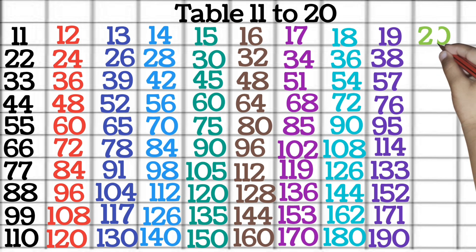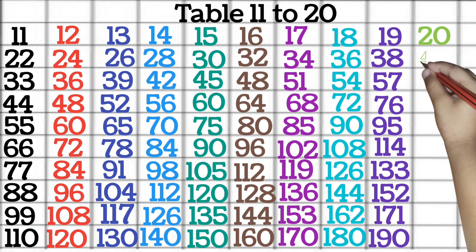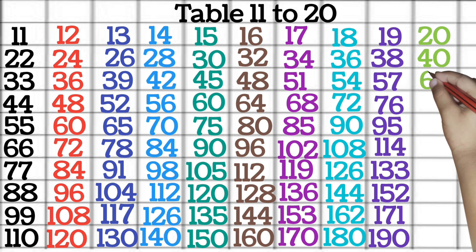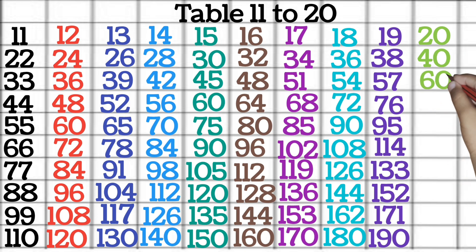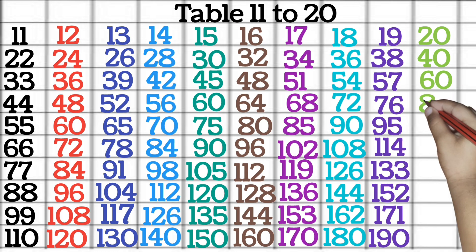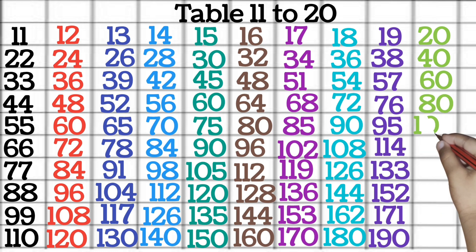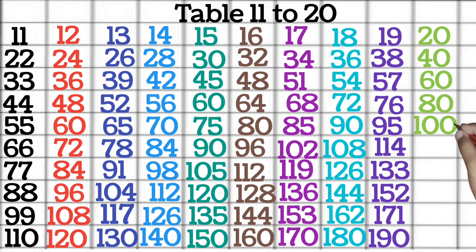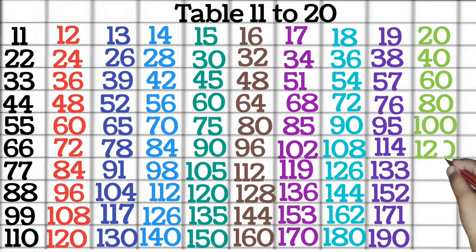Table of 20. 20 1 jah 20. 20 2 jah 40. 20 3 jah 60. 20 4 jah 80. 20 5 jah 100. 20 6 jah 120.